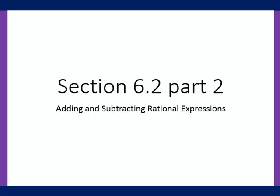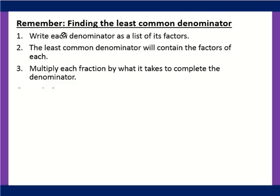6.2 Part 2: Adding and Subtracting Rational Expressions — the real deal this time because we are going to have to get our own common denominators. The steps for finding least common denominators: write your denominator as a list of its factors, then the least common denominator will contain the factors of each, and we multiply each fraction by what it takes to complete the denominator.